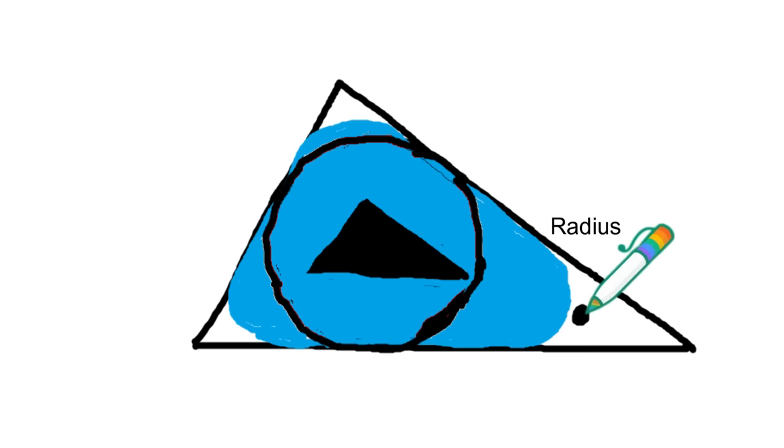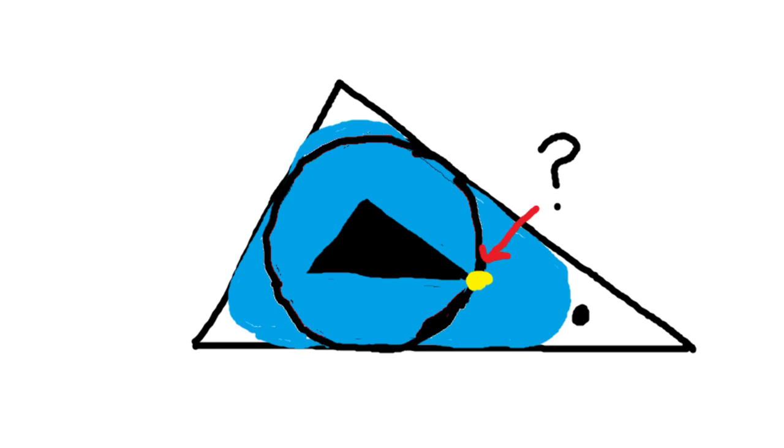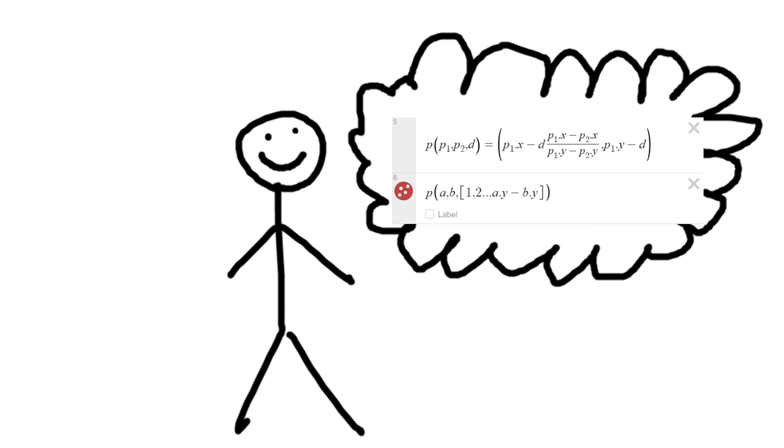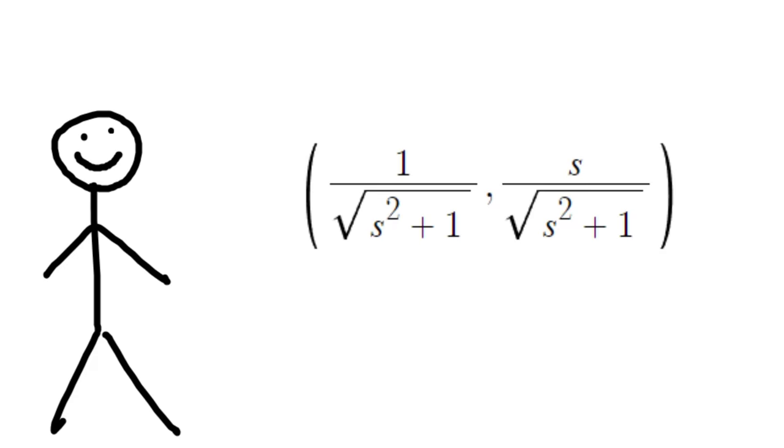We can find this using the same approach we used for the incenter, but we can't find this point mathematically yet because we still need the equation for this point. This point is along a line that goes from the incenter to the corner of the triangle, and the radius of the circle is the distance from the incenter. At this point, I had completely forgotten about my original attempt at the equation to move along a line, so I made a completely different equation from scratch. Here's how I got it.